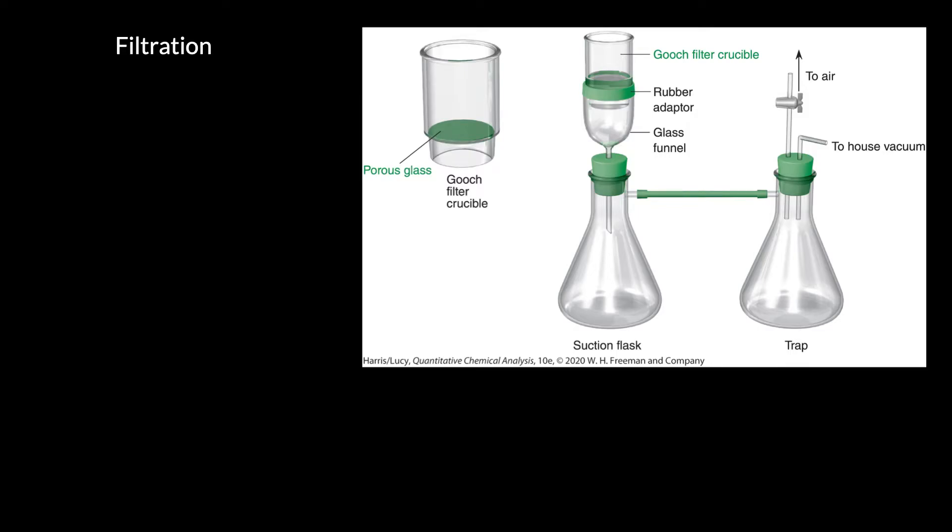Many times in the lab part of the course, we will filter our precipitate and weigh it. We will use not filter paper in a funnel, but what's called a fritted glass funnel or a gooch filter crucible.